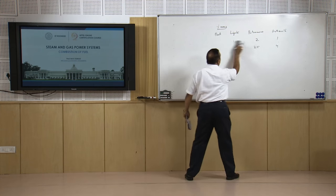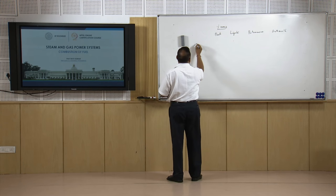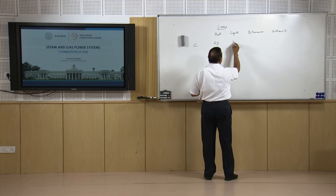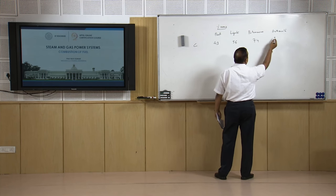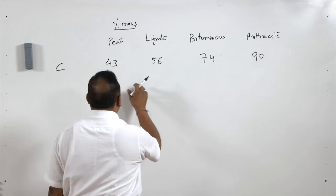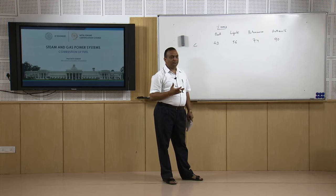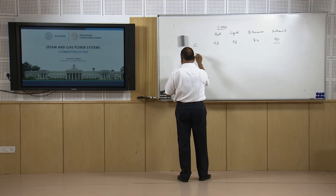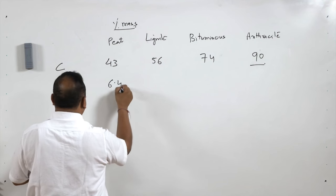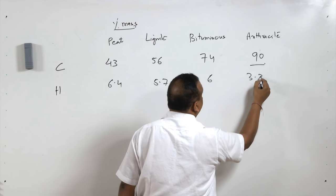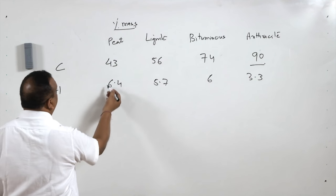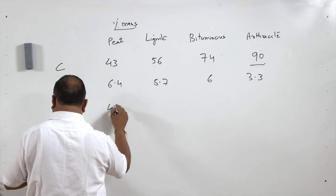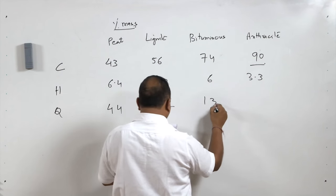The percentage of carbon in peat coal is only 43 percent by mass, lignite 56 percent, bituminous 74 percent, and anthracite up to 90 percent — the highest quality coal because carbon oxidation generates the majority of heat. Hydrogen is 6.4 percent in peat, 5.7 in lignite, 6 in bituminous, and 3.3 percent in anthracite. Oxygen in peat coal goes up to 44 percent, lignite 32 percent, bituminous 13 percent, and anthracite 2.5 percent.